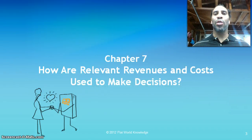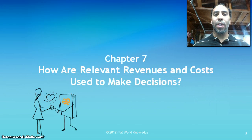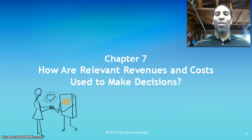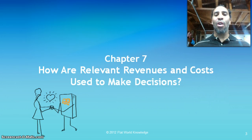Hello class, this is Demetrius Wilson and we're all the way to chapter 7, week 7 of 9. We're almost there, I'm sure you're all glad. So chapter 7 we discuss how relevant revenues and costs are used to make decisions.